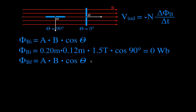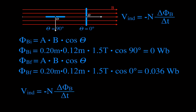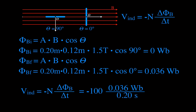After rotating the coil, we have the same area and the same magnetic field strength, but now the angle between the field and the perpendicular to the coil face is 0 degrees, and cosine of 0 is 1 — we're at a maximum. We go from 0 to a maximum flux of 0.036 Webers. Using our equation with 100 coils, the change is 0.036 minus 0, divided by 0.2 seconds, giving an induced voltage of 18 volts.